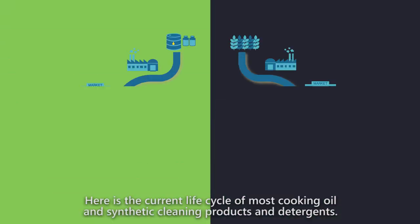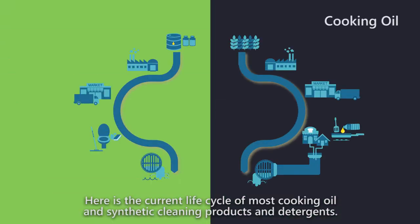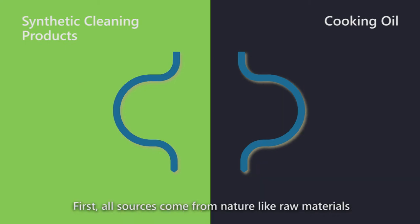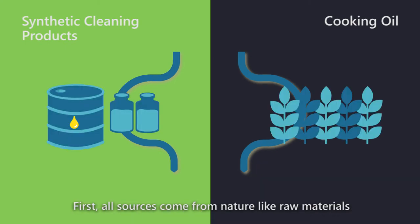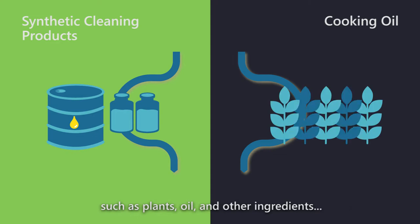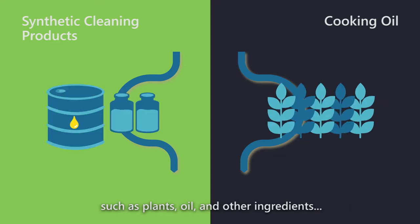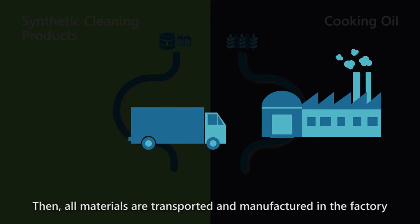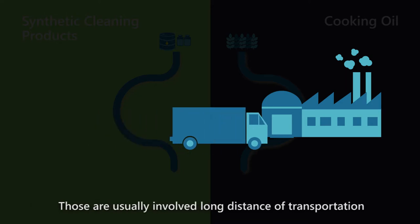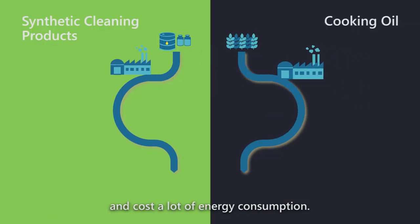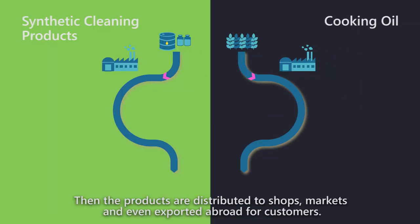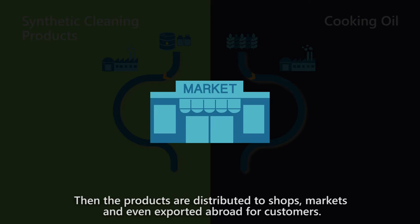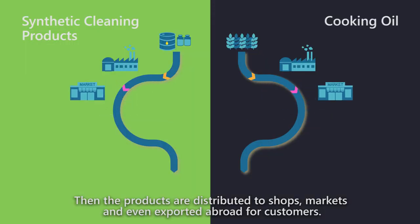Here is the current life cycle of cooking oils and synthetic cleaning products and detergents. First, all sources come from nature — raw materials such as plants, oil, and other ingredients. Then all materials are transported and manufactured in the factory, usually involving long distances of transportation and a lot of energy consumption. Then the products are distributed to shops, markets, and even exported abroad for customers.